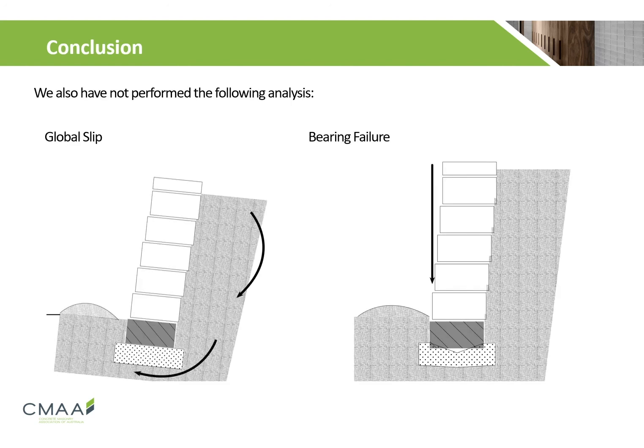To conclude our design, the example satisfies the sliding and overturning properties of AS 4678, although further analysis will still need to be done. Once the analysis for global slip and bearing failure have been completed, we can safely say that our design example completely satisfies AS 4678 limit state design principles.